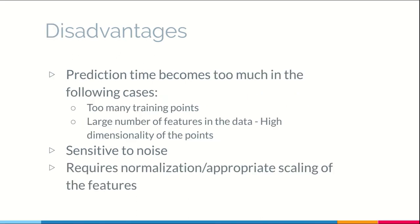The disadvantages are the prediction time becomes too much in certain cases, that is when there are too many training points. So in that case, you will have to find the distance of the new test point. For each test point, you need to find the distance from a huge number of training data points. Also when there are a large number of features, the data point becomes very high dimensional. In this case, calculating the distance of one point itself may become computationally intensive. Thus, because of this, the prediction time may increase significantly. It is also sensitive to noise as we had seen earlier. And it also requires appropriate normalization or feature scaling so that certain features do not affect the distance more than certain other features.